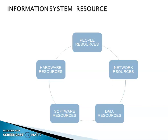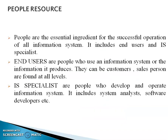Now we are going to look at one component after the other. The first resource is people. People play important roles wherever you go, and even in the information system, people play a main role. We come across two kinds of people: end users and IS specialists. End users are those people who are going to use our product. For example, if you create an app, the persons who use it are considered end users — they can be a customer or salesperson at any level.